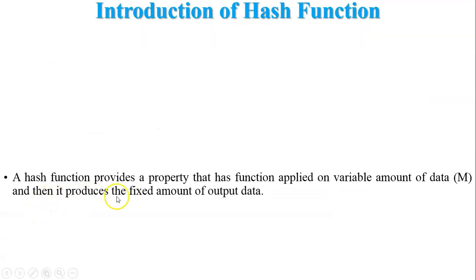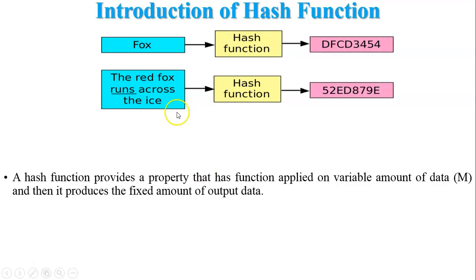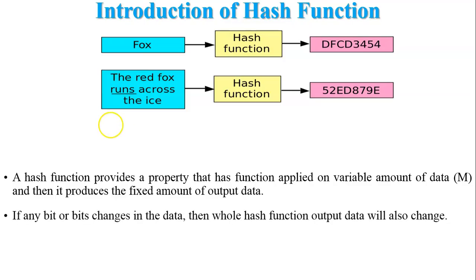A hash function has the property that it applies to a variable amount of input data M and produces a fixed amount of output data — the hash value small h. For example, the message 'fox' produces a certain hash value, and the longer message 'the red fox runs across the eyes' produces another hash value. The hash values of both messages are the same length even though the lengths of the input messages are variable. This is one of the properties of a hash function.